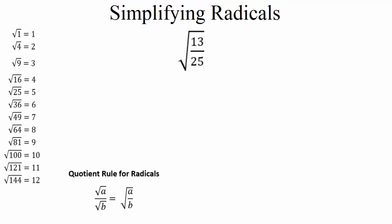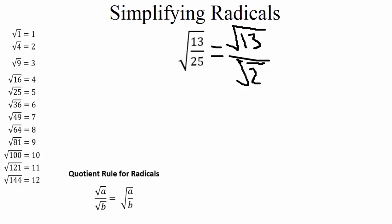For the square root of 13 divided by 25: can we divide 13 by 25 to get something nicer? No, 13 does not divide evenly by 25. So instead, we use the quotient rule to split this into the square root of 13 divided by the square root of 25. The square root of 13 — since 13 is prime — can't be simplified. But the square root of 25 is a perfect square equal to 5. So our answer is the square root of 13 over 5.